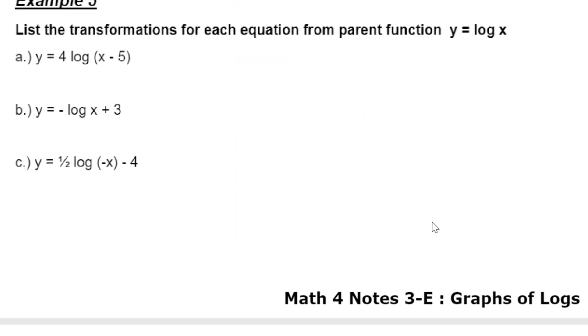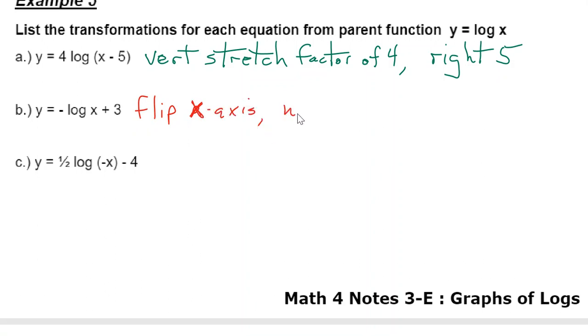For these last few, we're going from math to English and then English to math. As far as the transformations are concerned, this would be vertically stretched by a factor of 4. And then we would go right 5, 5 units to the right. Here we are flipping on the x-axis, and then we're going up 3. Here we are vertically flattening by a factor of 1.5, and we are flipping on the y-axis, and we are going down 4.